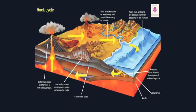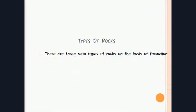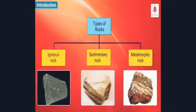Rocks continuously transform between the three rock types in a process called the rock cycle. As shown in the picture, there are three main types of rocks, which are part of this slow cycle of matter. There are three main types of rocks on the basis of formation: igneous rocks, sedimentary rocks, and metamorphic rocks.